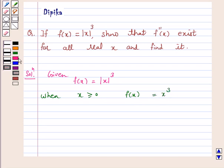So f dash x is equal to 3x square. And f double dash x is equal to 6x, which exists for all real values of x.